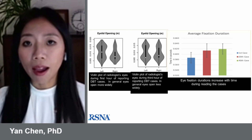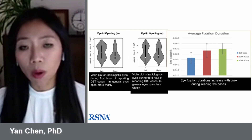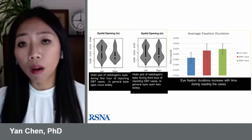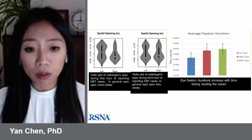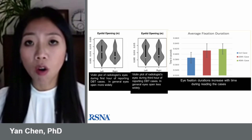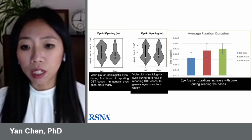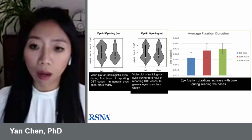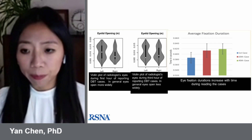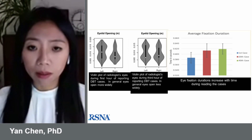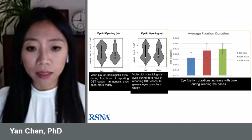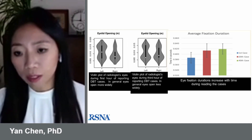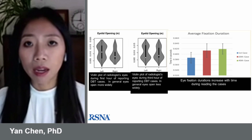One aspect of eye tracking is that we can follow what happens when a reader reads a series of cases over a long period of time — here around 3-4 hours. In this study we found that over time, eye fixation duration increases, as shown on the right diagram. The red and green bars are much larger than the blue bars. The violin plots on the left demonstrated that the radiologist's eyes were not opening as widely as at the beginning of the session. All this indicates a sign of possible fatigue.